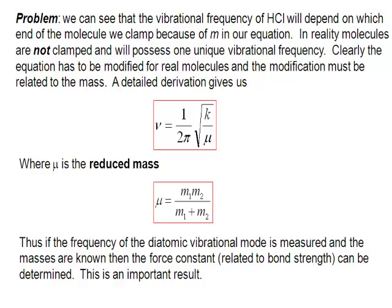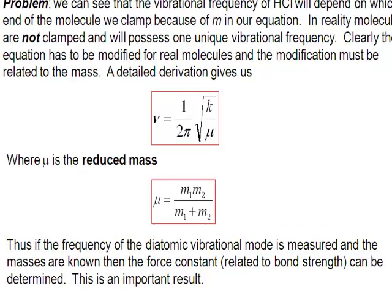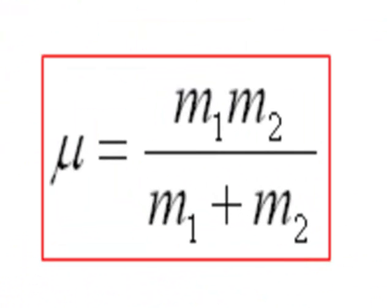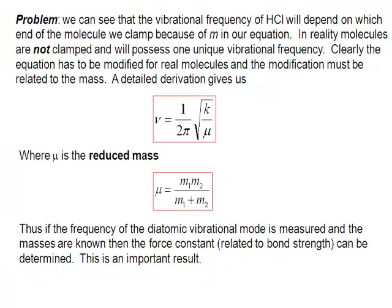So our picture of the masses is wrong. We have to have some kind of average mass. It turns out that the average mass we need is something called the reduced mass. And the reduced mass is given by the products of the masses of the two nuclei divided by their sum. So instead of using m in our equation, we use the reduced mass and that gets around this problem of the clamped molecule.